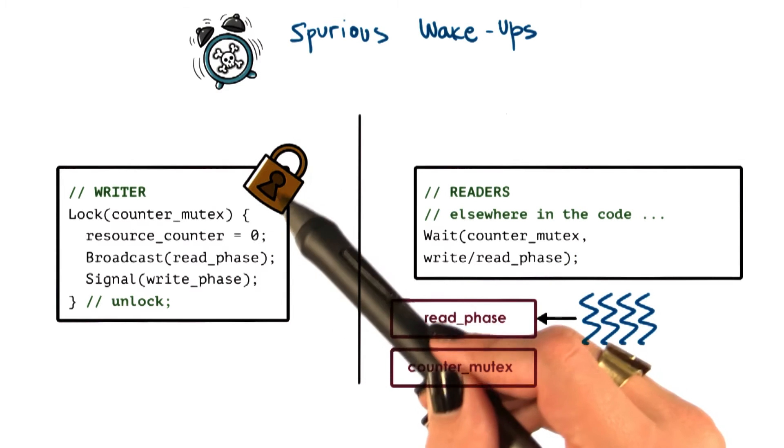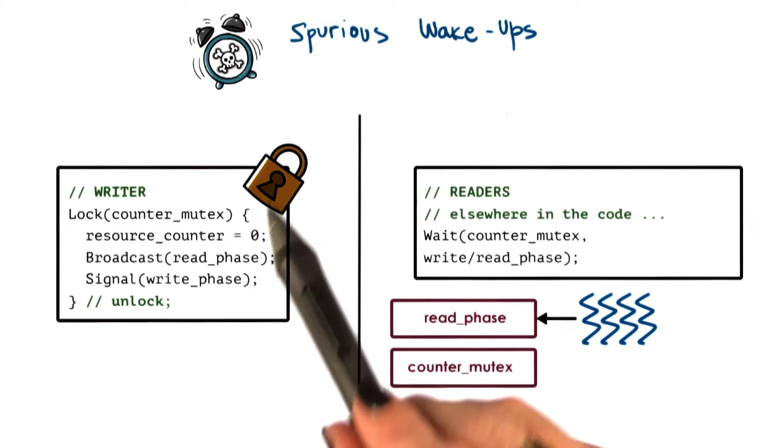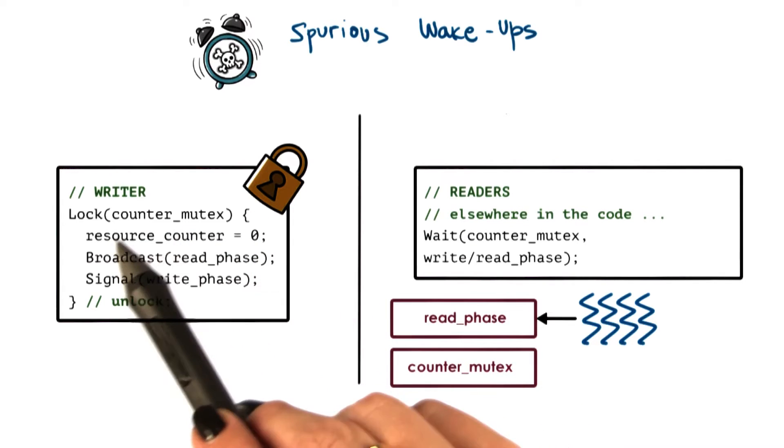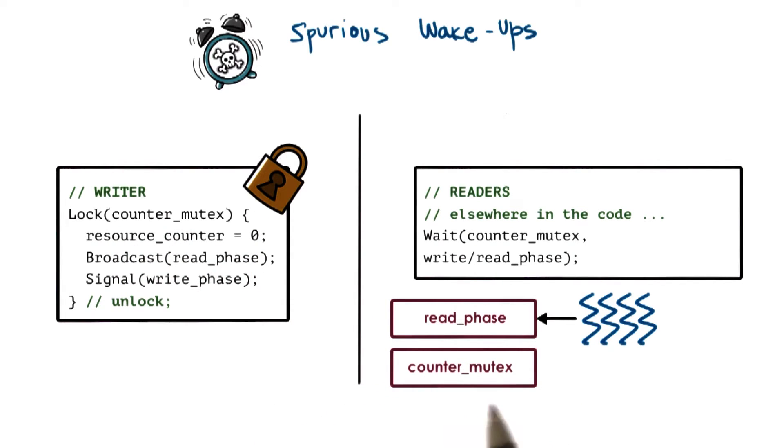Let's say currently there is a writer that's performing a write operation. So it is the one that has the lock counter mutex, so this is the shared lock. And then elsewhere in the program,